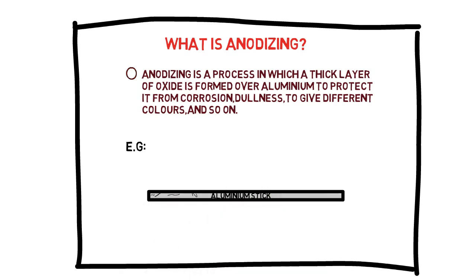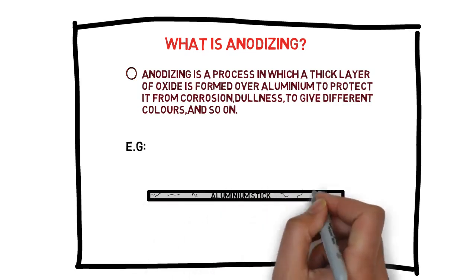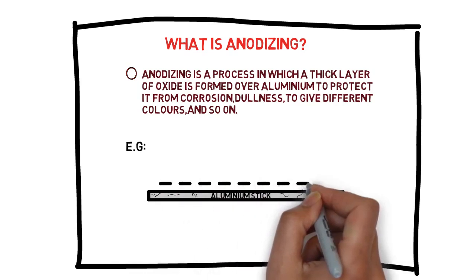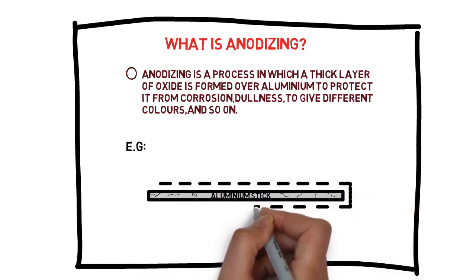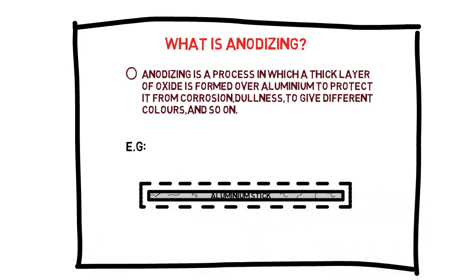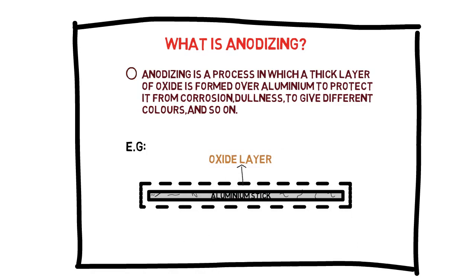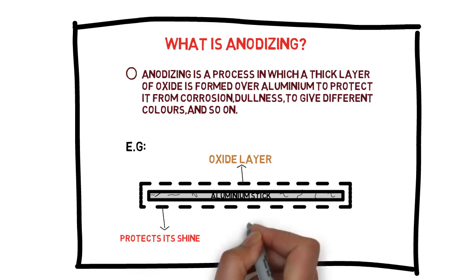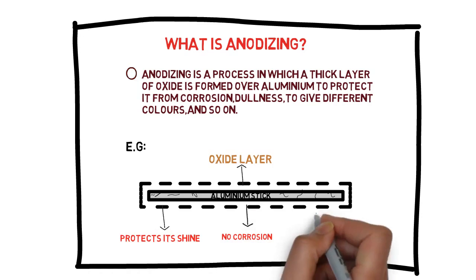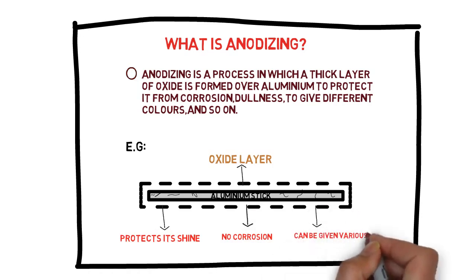However, a thin oxide layer is formed over aluminum as it is a highly reactive metal. This thin layer of oxide prevents aluminum from further oxide formation. So we use the anodizing process to form a thick layer and strengthen the bond of oxide with aluminum. After anodizing aluminum, we can prevent it from further corrosion, scratches, and so on. We can also give any color to the anodized stick.